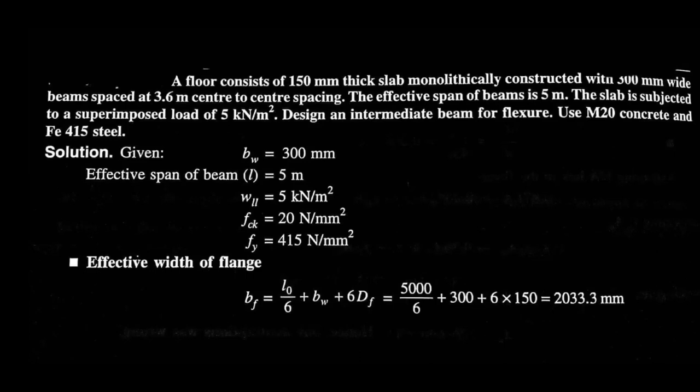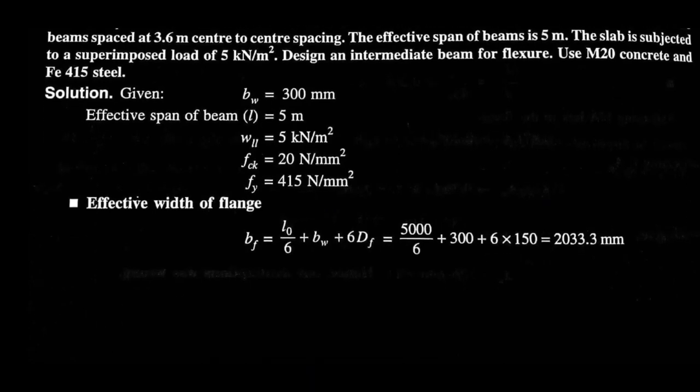FCK is 20 N per millimeter square for M20 grade of concrete, and FY is 415 N per millimeter square for Fe415 steel. Now we have to find out effective width of the flange first.